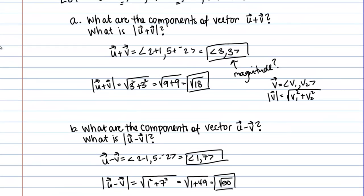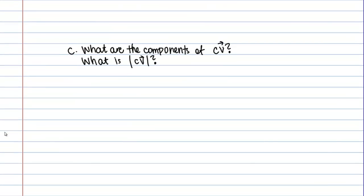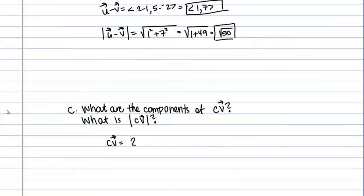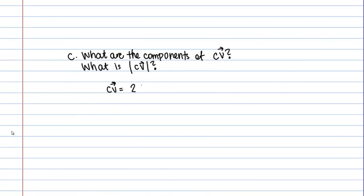What was C? C was 2. I'm multiplying 2 by vector V. Vector V was <1, -2>. You'll often see it written like this. It's kind of like 2 times the vector <1, -2>. Basically, all you do is you're just going to take that 2 and multiply it by each component.